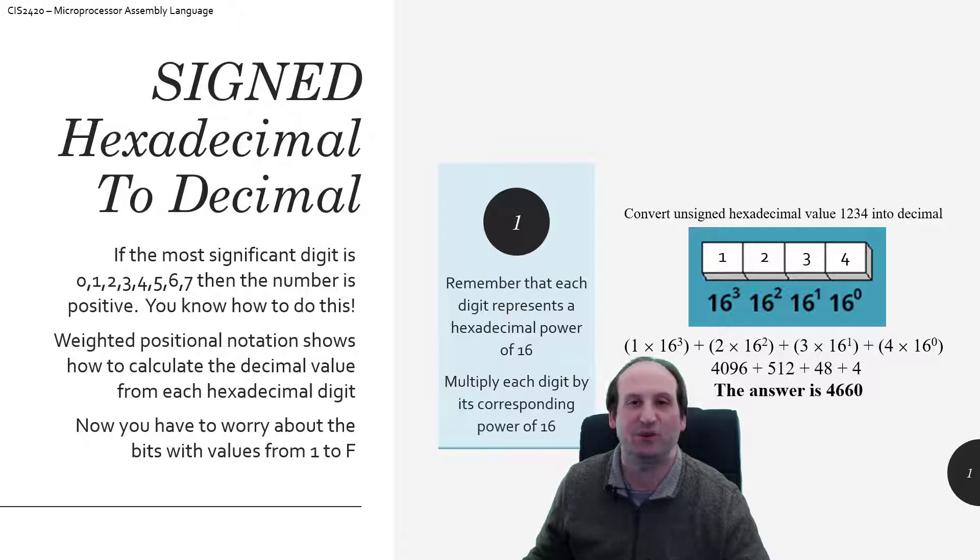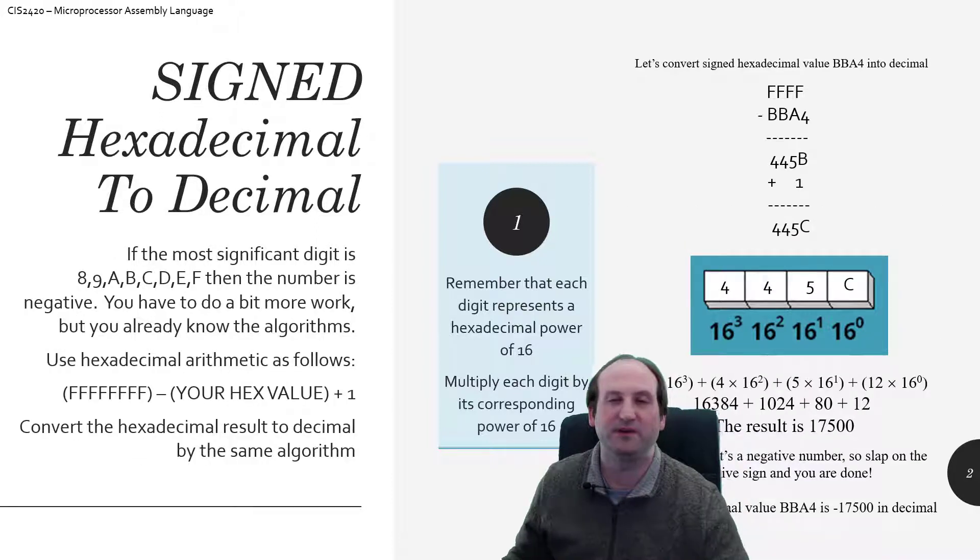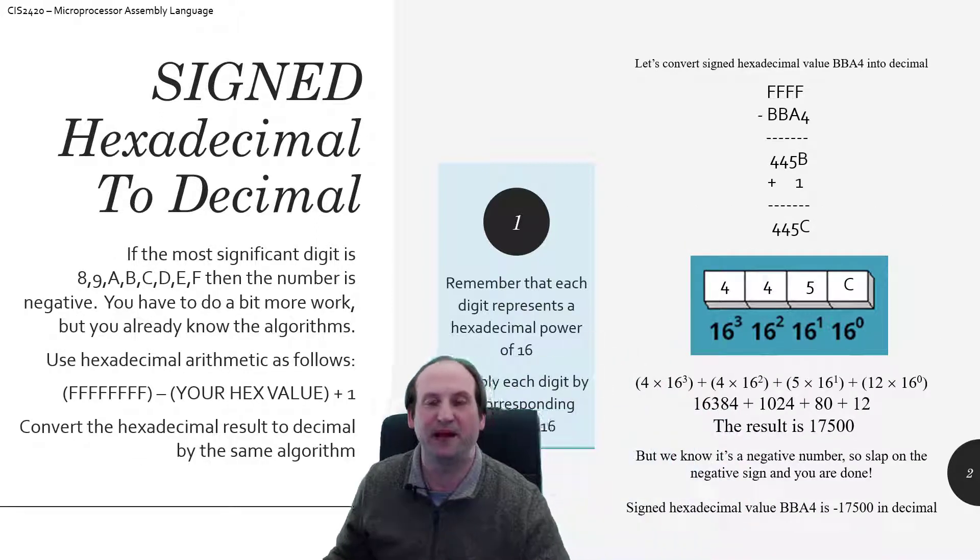which gets us to 4,660 as the answer. This example takes us down the 2's complement path because we're looking at BBA4. I tell you it's a signed hexadecimal value. I see a B, that's a letter, that tells me it's a negative number because it's in that 8 to F range, which means the most significant bit in that number is a 1.